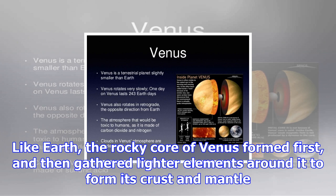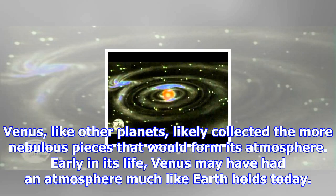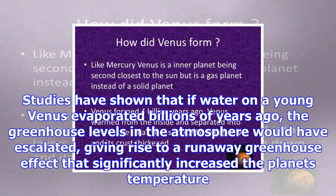In this way, asteroids, comets, planets, and moons were created. Like Earth, the rocky core of Venus formed first, and then gathered lighter elements around it to form its crust and mantle. Venus, like other planets, likely collected the more nebulous pieces that would form its atmosphere.